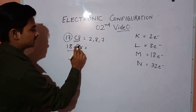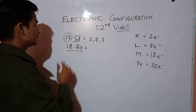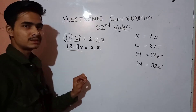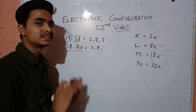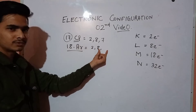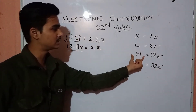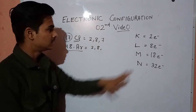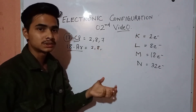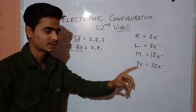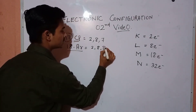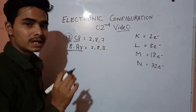Now it is time for argon. What is the electronic configuration of argon? The first 2, 8 is the same — I'm 100% sure you've understood that by now. How many electrons are still left? 8 electrons are still left. So those 8 electrons will go into the M shell. The electronic configuration of argon is 2, 8, 8.